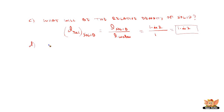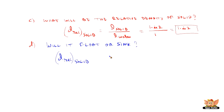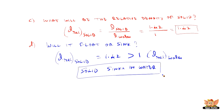Now we will see the fourth part of the question: will it float or will it sink? We know if the relative density of the solid is greater than that of water, then it sinks. In this case, the relative density of the solid is 1.42, which is greater than 1, the relative density of water. Since 1.42 is greater than 1, the solid sinks in water. With this problem, we understand how relative density helps in finding out whether a particular substance floats or sinks in water.